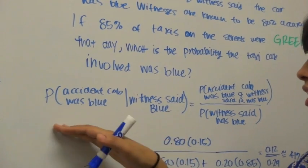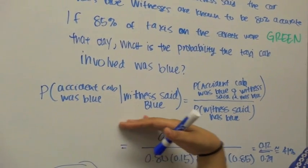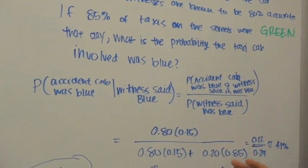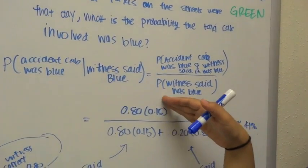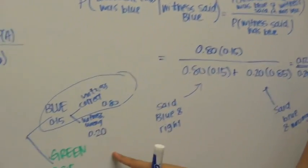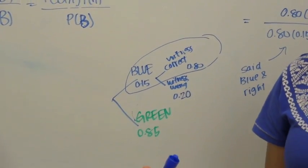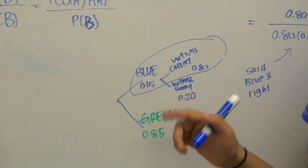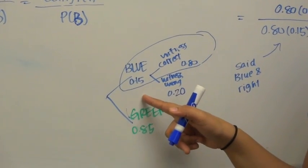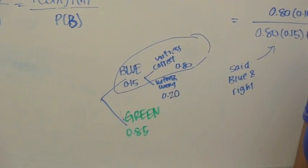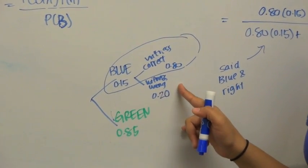By using the witness accuracy information, we can apply Bayes theorem. The expression to solve is: the probability the cab was blue given that the witness said it was blue. That expands to the probability the cab was blue and the witness said it was blue over the total probability the witness said it was blue. Looking at a tree diagram, we split into scenarios where the witness would say it was blue. Since 85% of cabs are green, 15% are blue. Witnesses are correct 80% of the time and incorrect 20% of the time.